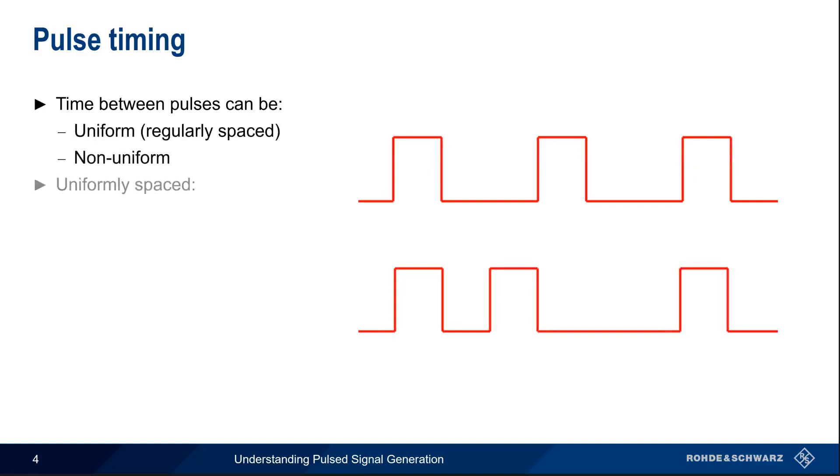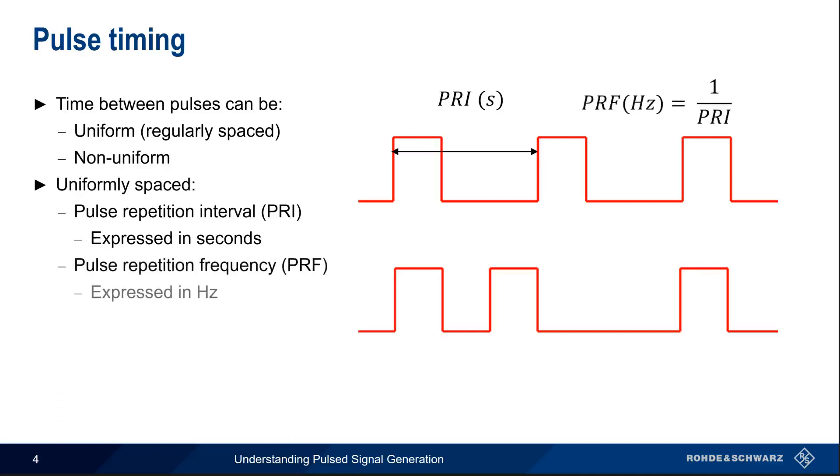When generating uniformly spaced pulses, we simply need to define this fixed interval. The most common way of doing this is by defining the pulse repetition interval, or PRI, in units of seconds. You'll also sometimes see this as pulse repetition frequency, or PRF, which is expressed in hertz. PRF is simply the reciprocal of PRI.